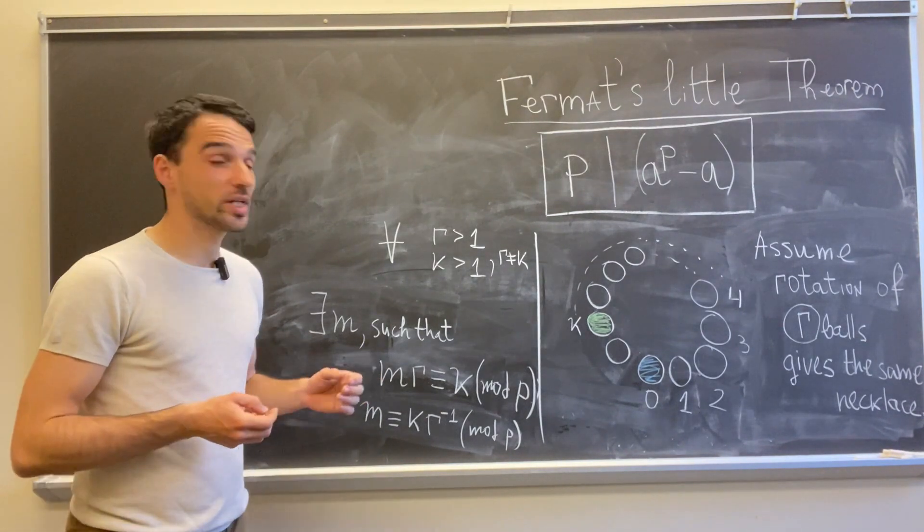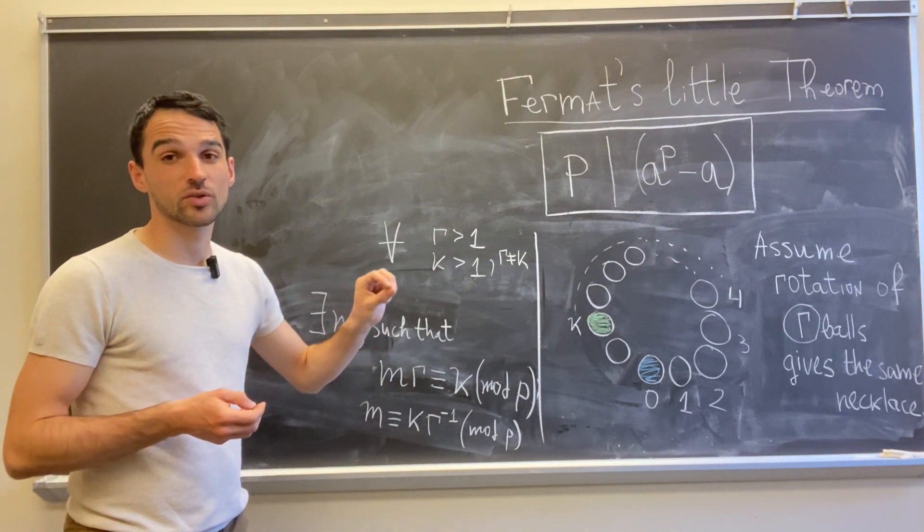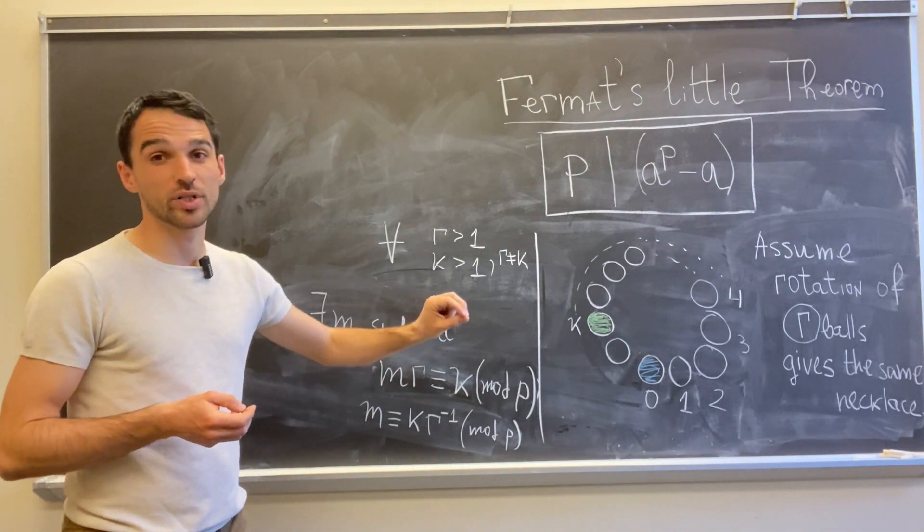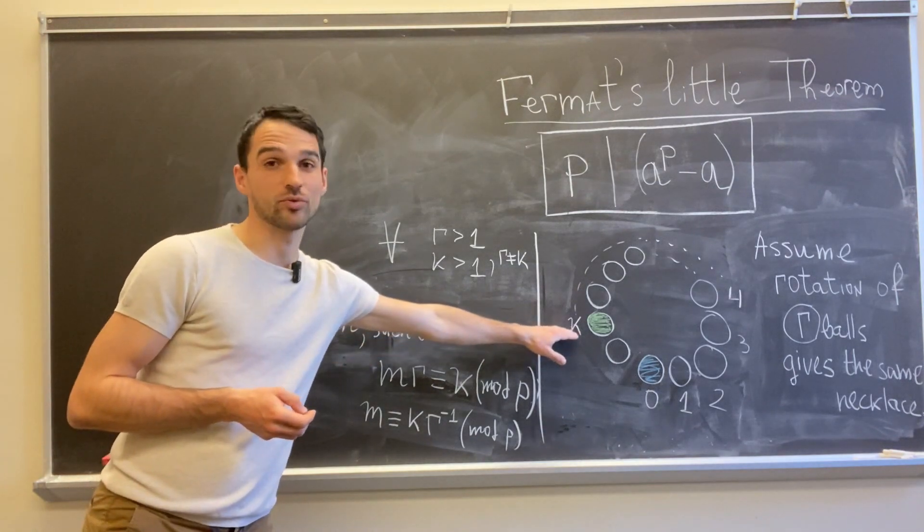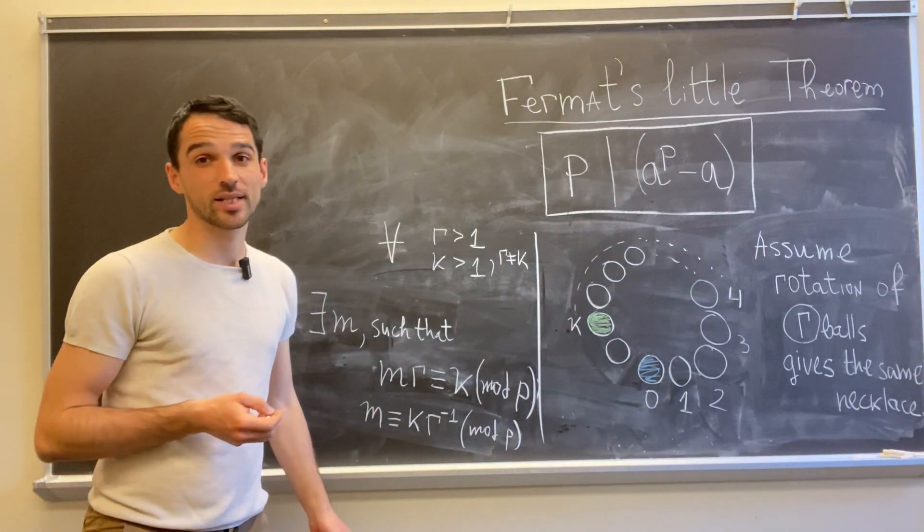Which means that when we do m different rotations, each of them with r balls counterclockwise, we must get to this ball. So we get our contradiction.